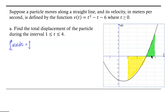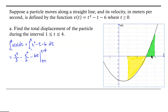So this is the integral from 1 to 4 of (t² - t - 6) dt. The antiderivative of t² is t³/3, minus the antiderivative of t which is t²/2, minus the antiderivative of 6 which is 6t. We evaluate that from t = 1 to t = 4.